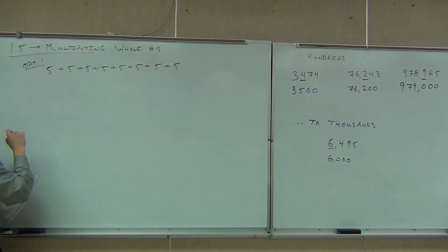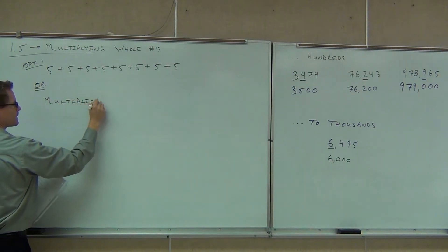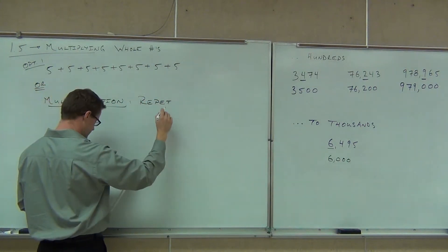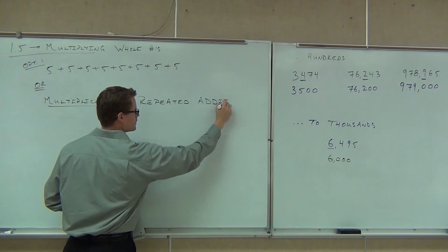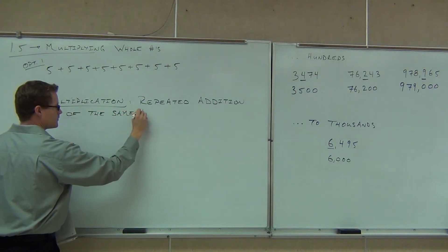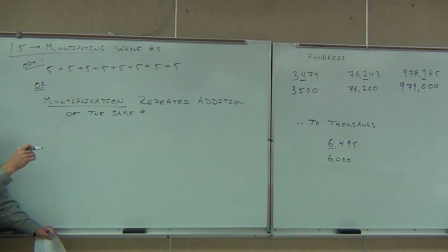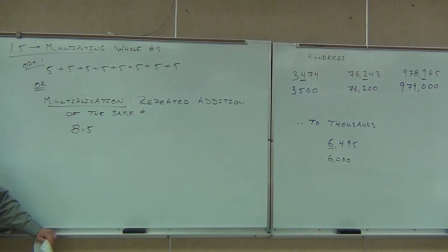So option one — not so great; I mean, you could do it and it'll give you the right answer. Or we could do multiplication. How we get multiplication is simply repeated addition of the same number. Instead of doing five plus five plus five plus five, how do I write it another way? Five times five. We have an eight because there are eight orchards, and then times five. I could use a little x — that's eight times five.